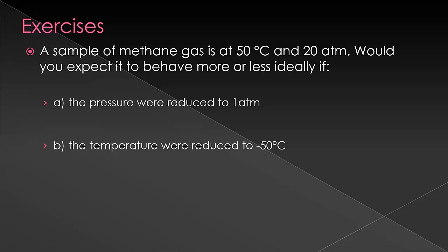Now, let's do an exercise using these principles that we've learned. So, a sample of methane gas is at 50 degrees Celsius in 20 atmospheres. Would you expect it to behave more ideally or less ideally if the pressure were reduced to one atmosphere? So, we're at a relatively high pressure at least compared to atmospheric pressure and we're going to reduce the pressure. If we're reducing the pressure, we're giving more space in between the molecules and so, that makes everything just a little bit more ideal and so, by reducing the pressure, we make it more ideal.